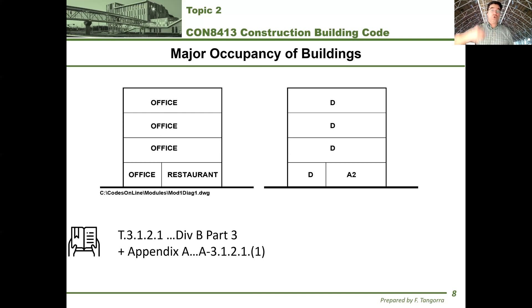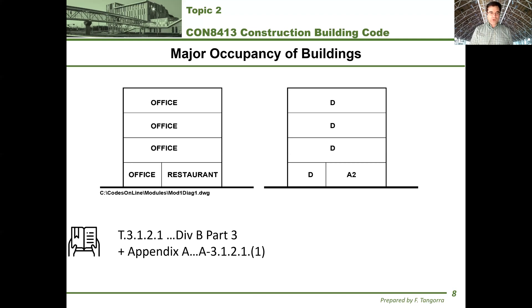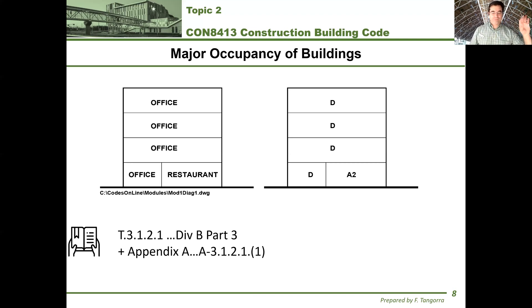Let's step it up even more: if you don't add the Appendix A reference in your test or final exam when identifying a major occupancy, your answer is wrong. There are so many things that are impossible to get by only referencing Table 3.1.2.1. For example, what is the occupancy of a dry cleaning establishment self-service? If you use the Appendix as shown, you'll be able to figure that out — go check out Appendix A and you'll be golden.